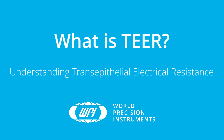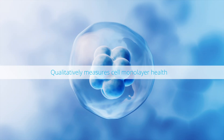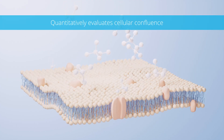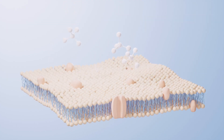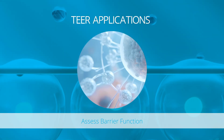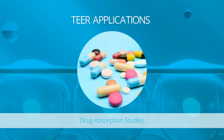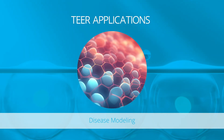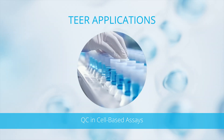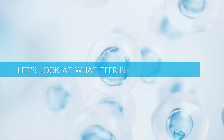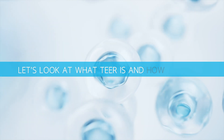Transepithelial-Endothelial Electrical Resistance, or TEER, qualitatively measures cell monolayer health and quantitatively evaluates cellular confluence by measuring the electrical resistance across the cell monolayer. It is commonly used to assess the integrity and permeability of cellular barriers, such as epithelial and endothelial cell layers in cell culture plates. Let's look at what TEER is and how it is used.